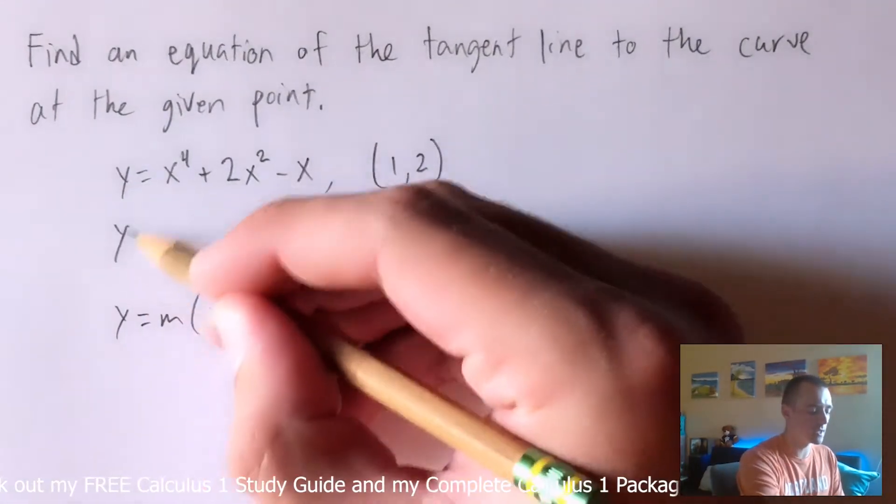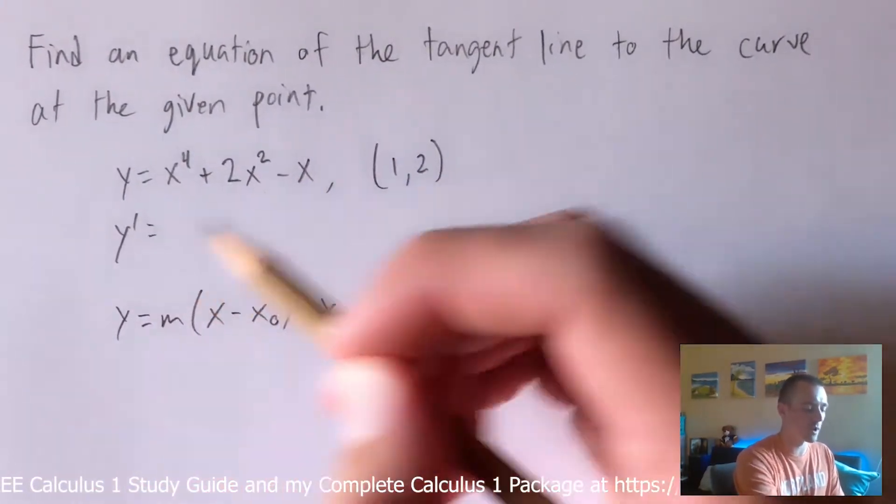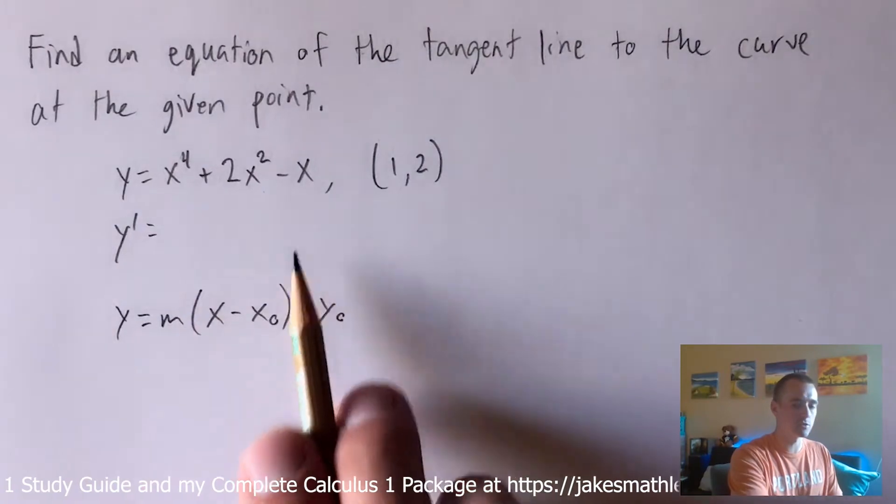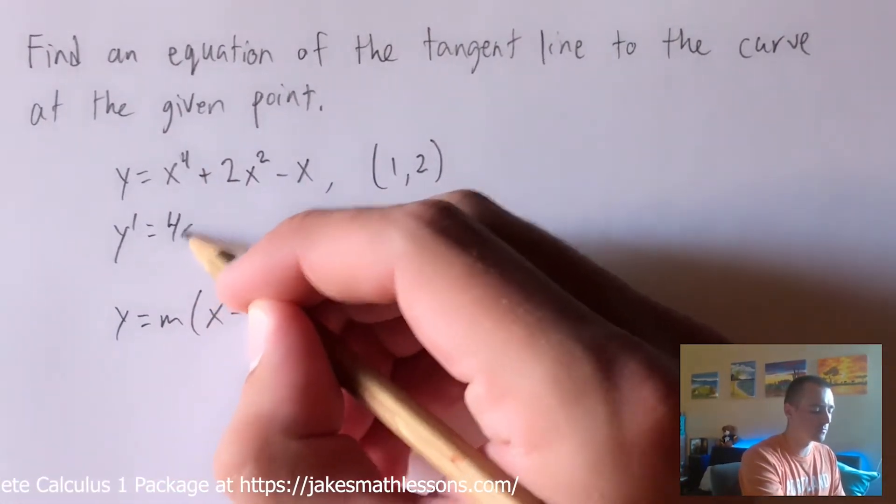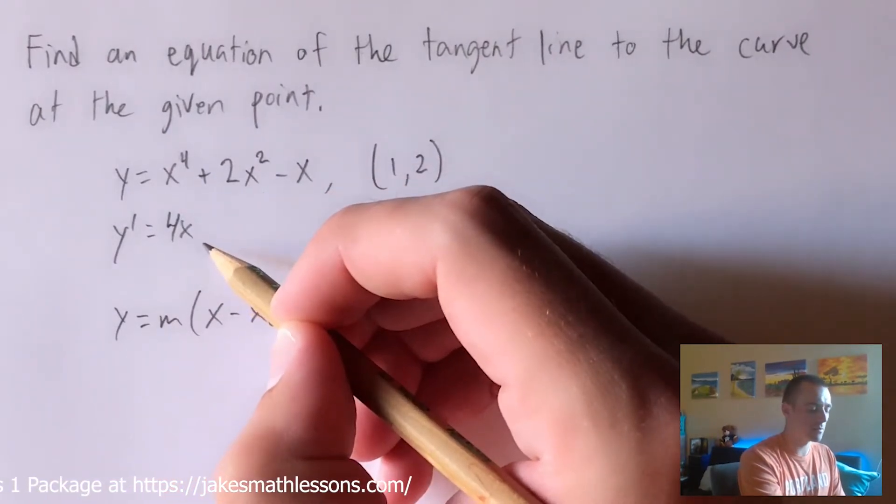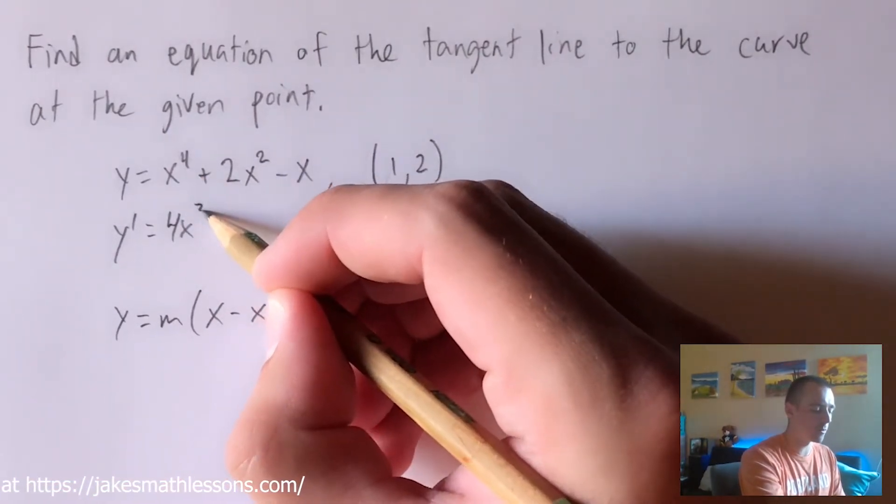So we're going to start by taking the derivative of this function, y prime, and we can actually find this function's derivative just by using the power rule. The power rule says we're going to bring our power down in front, leave our x there as the base, and then lower our power by 1.